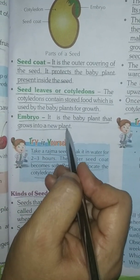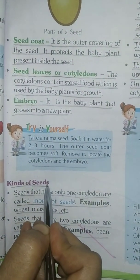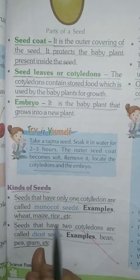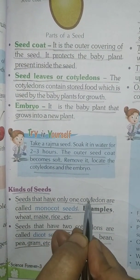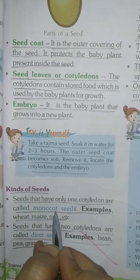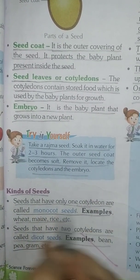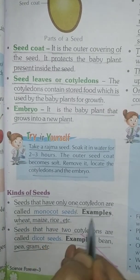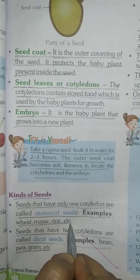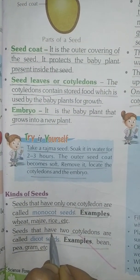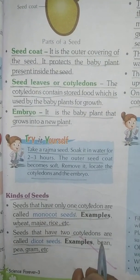Kinds of seeds — there are two types of seeds: monocot seeds and dicot seeds. Seeds that have only one cotyledon are called monocot seeds. Examples: wheat, maize, rice, etc. Seeds that have two cotyledons are called dicot seeds. Examples: bean,